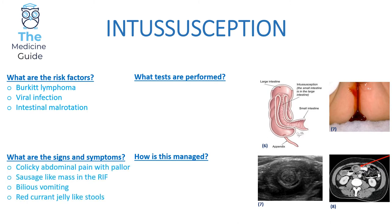The child will complain of colicky abdominal pain with pallor, there'll be an obvious sausage-like mass palpable in the right iliac fossa, bilious vomiting, and classically red-currant jelly-like stools — that's a very classic description which will without a doubt crop up in your exam. Another classic sign is that the child will draw up their knees to their chest, emphasizing they're in excruciating pain.